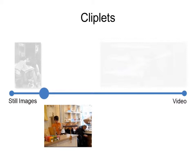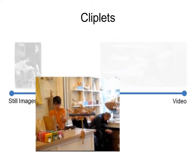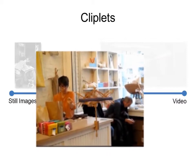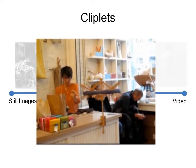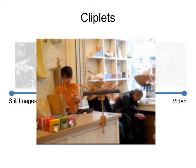This work presents cliplets: a category of media that, like the others, lies closer to the heart of a static image than a video, but obtains its power by juxtaposing static and dynamic elements. A subset of this class has also come to be referred to as cinemagraphs.